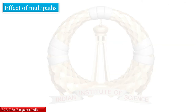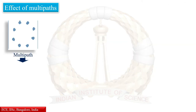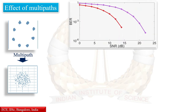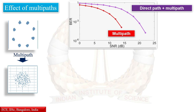Multi-path components are considered a major concern in all digital communication schemes. However, in the proposed scheme we have found that performance improves if there exists no direct path between the transmitting and receiving stations. In other words, a scatter-rich environment improves the performance of the proposed channel modulation scheme.